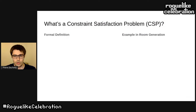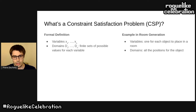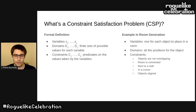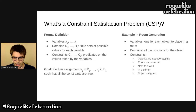My room generator is based on constraint satisfaction problems, which I will abbreviate as CSP. A CSP is composed of three things. First, variables — in room generation we'll have one variable for each object we want to place. Then domains — one domain per variable, which is a finite set of possible values; in room generation, the domain for an object will be all possible positions for that object. And finally, constraints, which are predicates on the values taken by variables. In room generation, we may want objects not to overlap, the room to be connected, or an object to be next to a wall or in a corner.